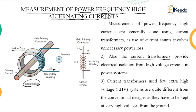This core consists of some turns of coil which allows a very small current to pass through an ammeter, which is used for the measurement of power frequency AC current. This coil wound on the core is called the secondary winding, and hence the conductor surrounded by this hollow core acts as the primary winding.